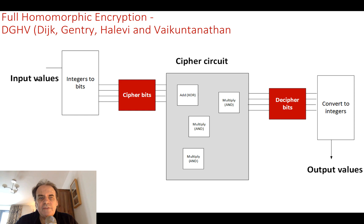So this is an example. We might have input values. We convert the integers to bits. They then become cipher bits. At this point here, we apply a public key if we're using public key encryption. Then those cipher bits go into a cipher circuit with exclusive ORs for ADDs and multiplies, which is AND. And then in the output, we decipher the bits. If we're using public key encryption, we use our private key here to decipher the bits and give us our output back again.